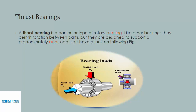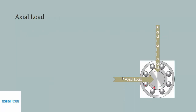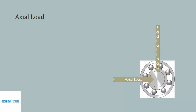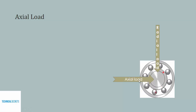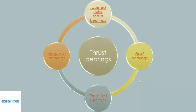Let's move on — here you can see the animation. The bearing is rotating, and you can see this is a radial load and this is the axial load. There are many different types of thrust bearings available in the market: tapered roller thrust bearings, magnetic bearings, thrust ball bearings, and fluid bearings.